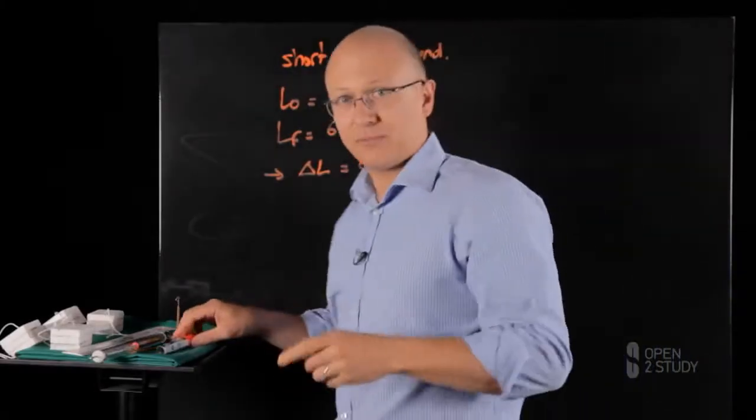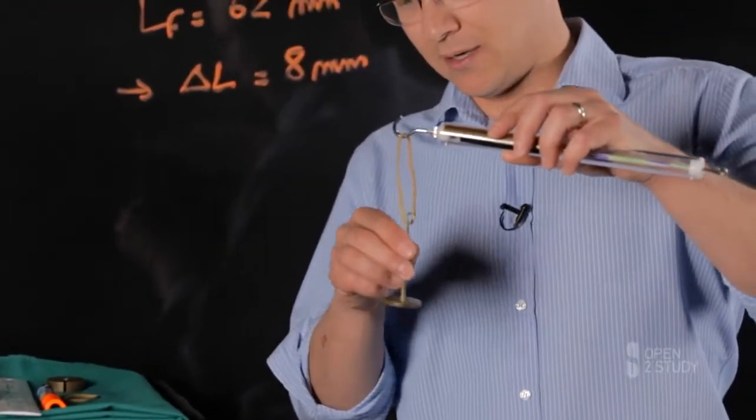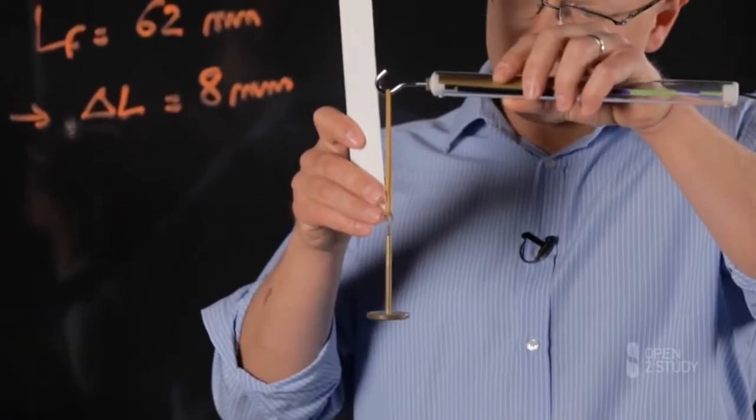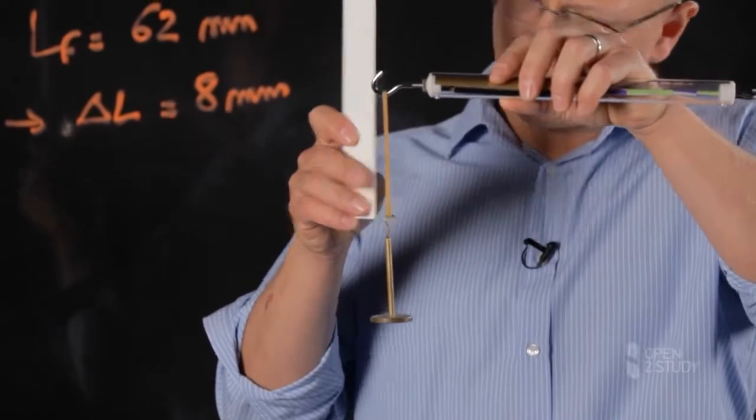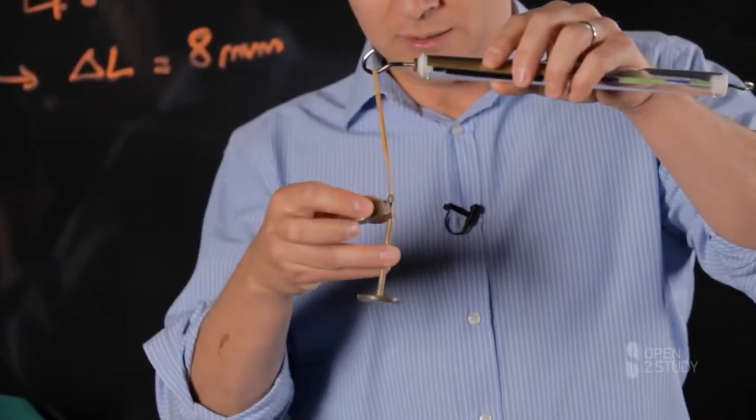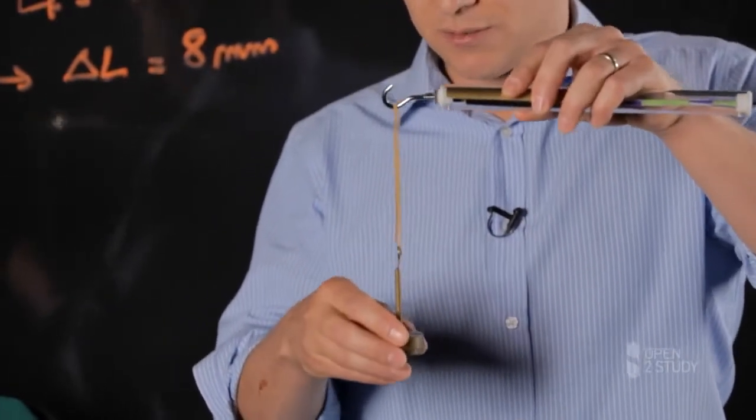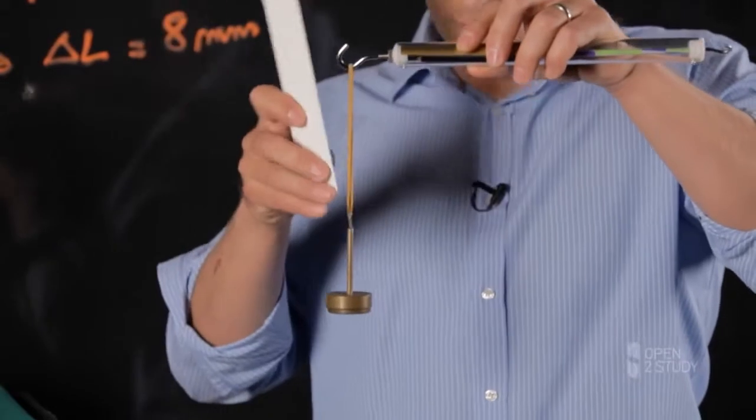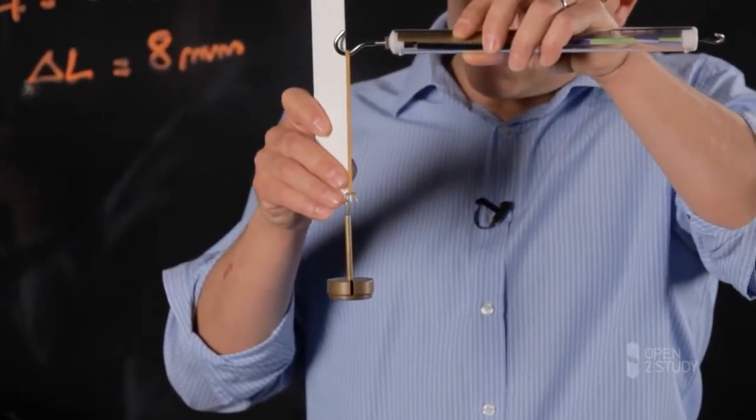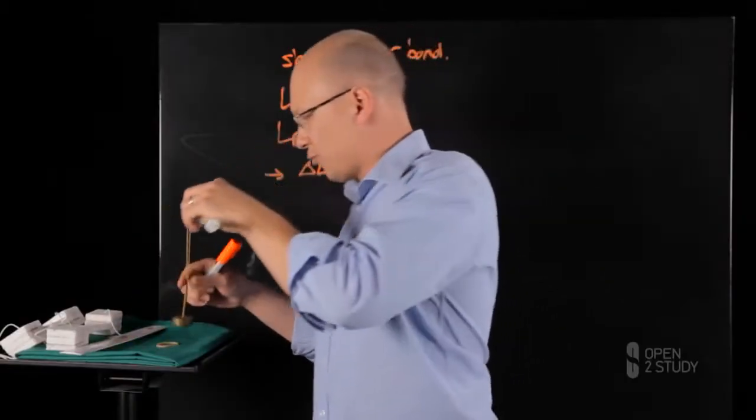Now, let's repeat the experiment with a longer rubber band. So again, we place the hanger on the band and measure the initial length. This comes at 102 mm. We place the weight on the hanger, and stretch the rubber band and measure the final length again. And it comes at about 117 mm. Let's write the results on the board.